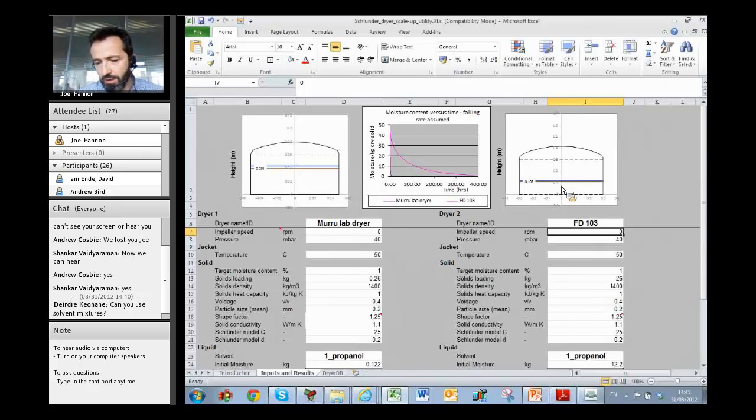But if I change this even to 5 RPM, 5 reps per minute in the plant dryer, then it will take the plant drying time down very considerably.